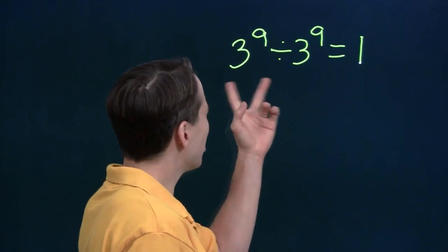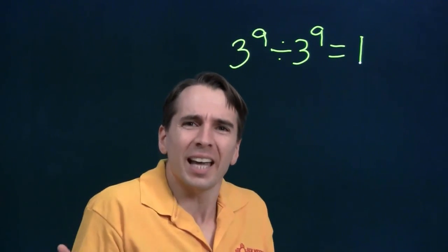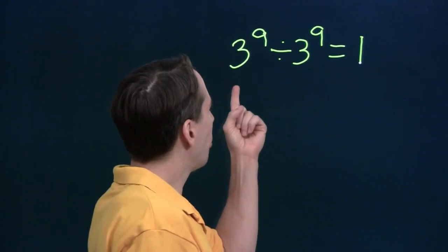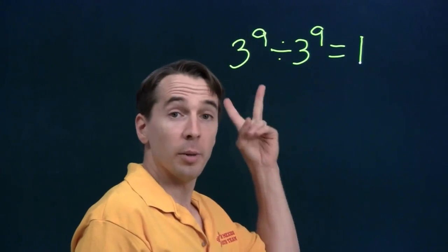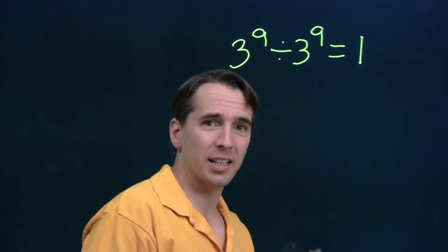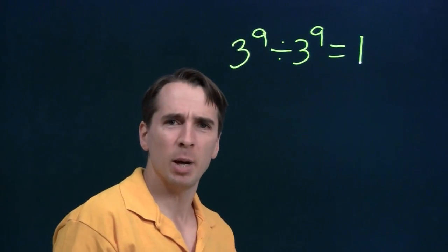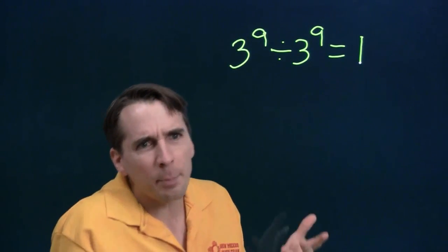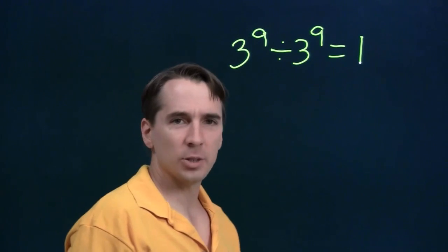But then I looked at this and I saw that the bases are the same, and I remember we've got an exponent rule for when we divide two powers where the bases are the same and the first exponent is higher than the second exponent. Now here the exponents are the same, so I wondered what would happen if we let that rule work when the exponents are the same.